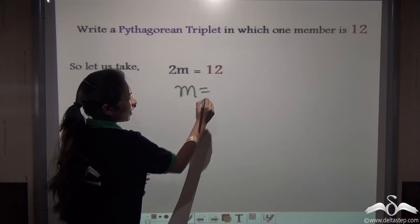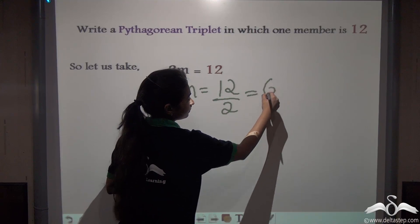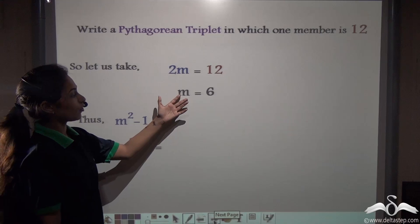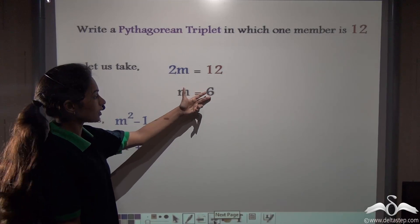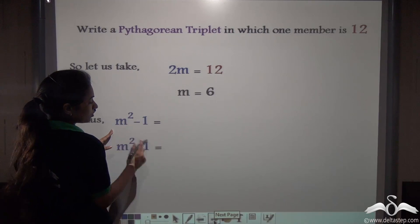Now you will easily get a value for m, that is 12 by 2, that is 6. So as we have got m is equal to 6, we can now substitute this for m to find out the other numbers of the Pythagorean triplets. So find this out.